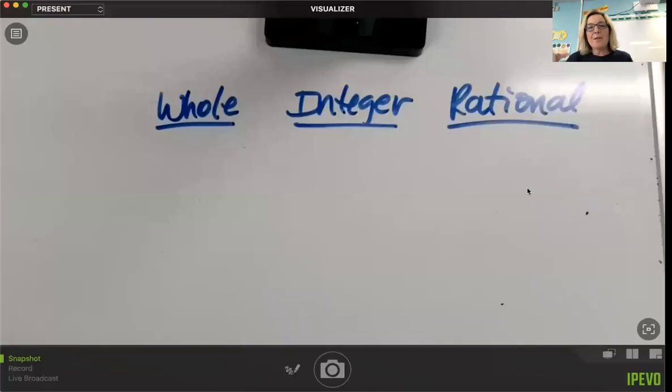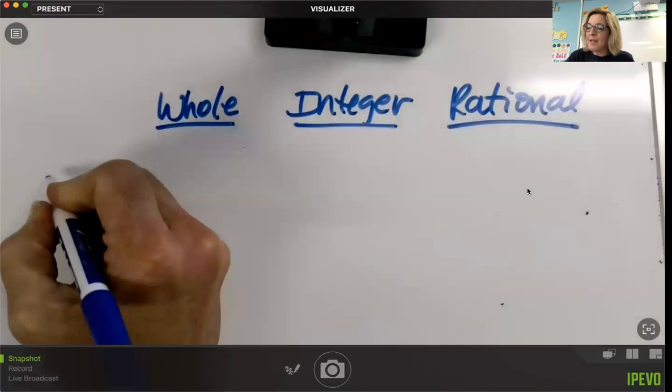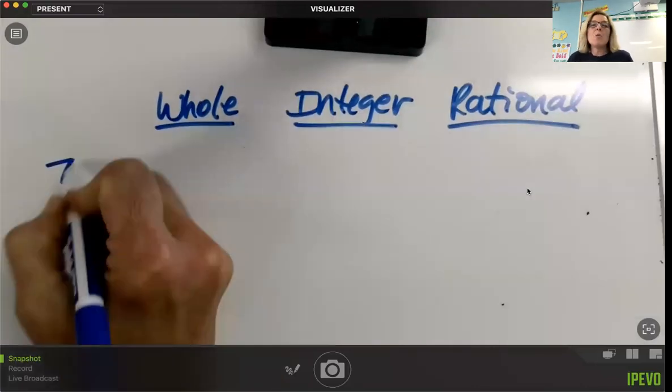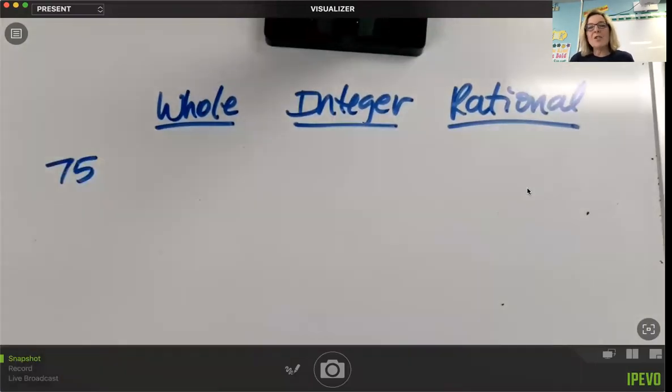Okay, so now I'd like you to make three columns. The first one is whole numbers. Second one is integers. The third one is rational numbers. I'm going to write a number over here on the right. First number is 75. We're going to put a check mark under each column that the number 75 could be classified as.